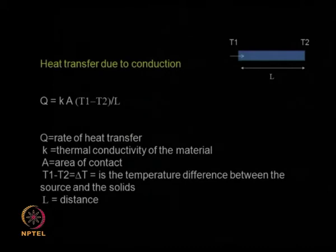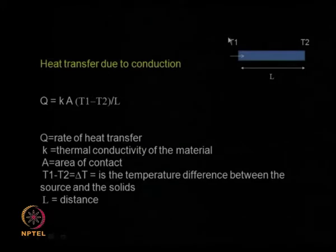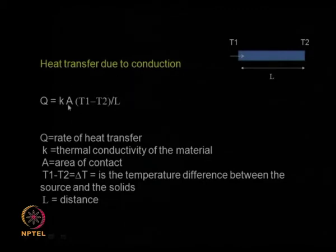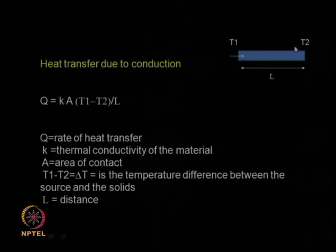Let us look at simple heat transfer relationships. For conduction: if a solid material has temperature T₁ at one end and T₂ at the other end, with T₁ higher than T₂ and length L, then the rate of heat transfer Q equals k × A × (T₁ − T₂) / L, where k is the thermal conductivity of the material and A is the area. The rate of heat transfer is a function of the thermal conductivity, the cross-sectional area, the temperature driving force, and is inversely proportional to the distance.